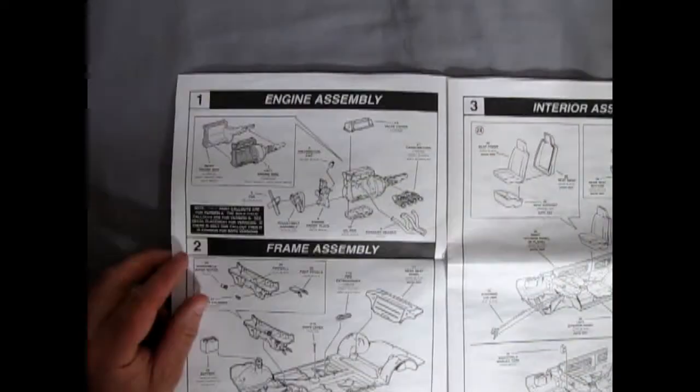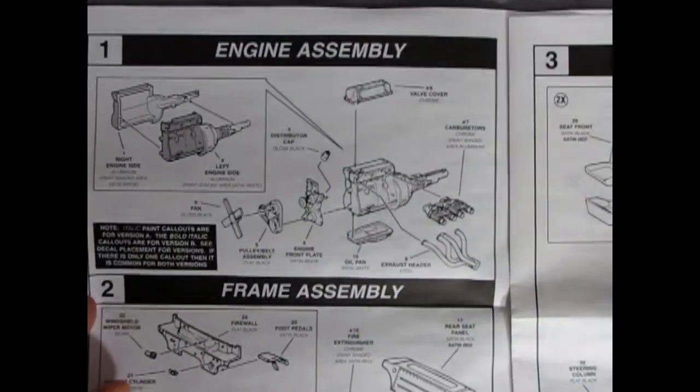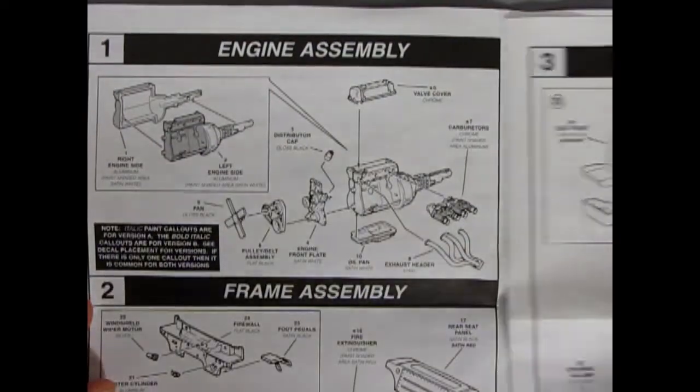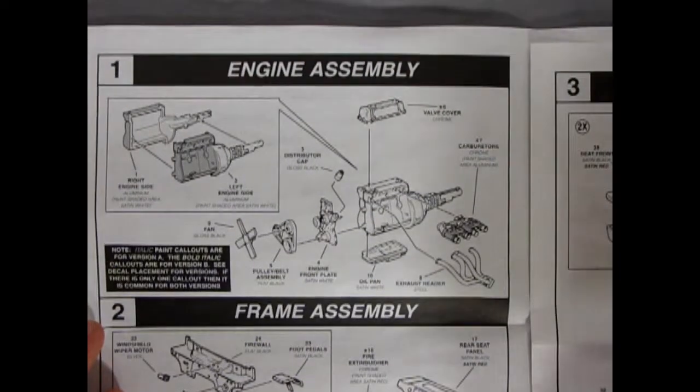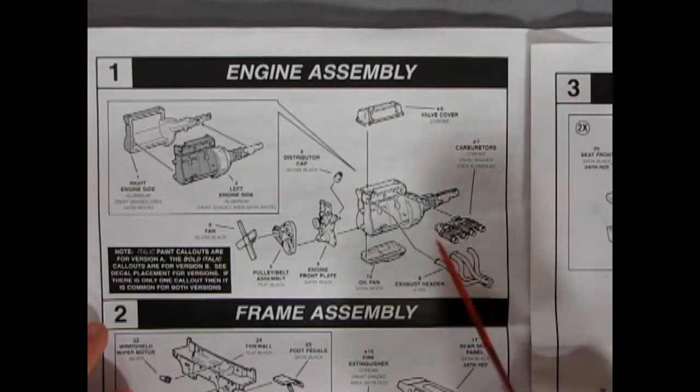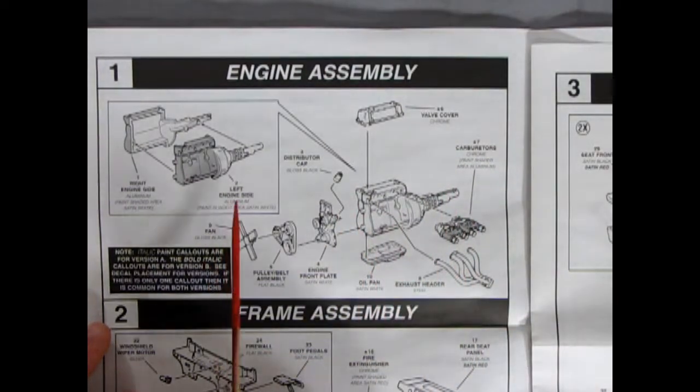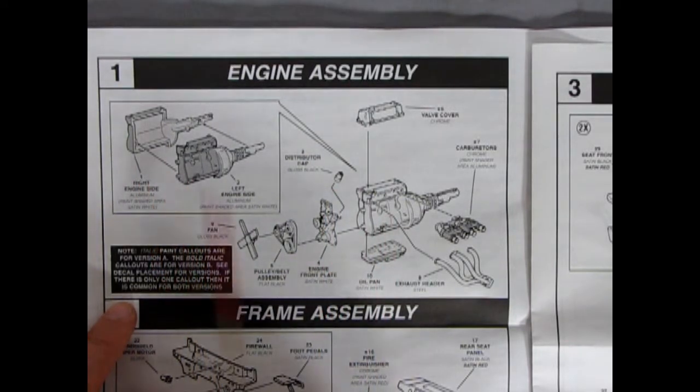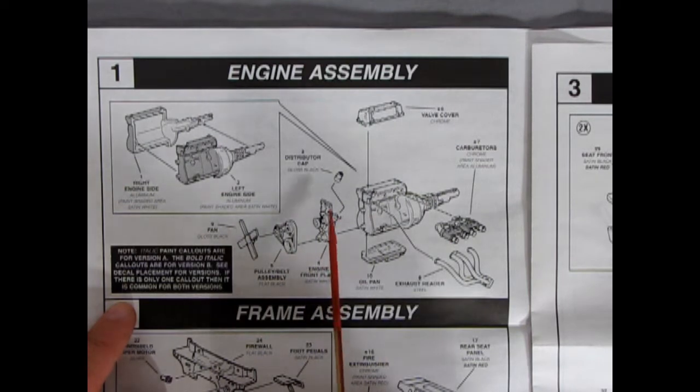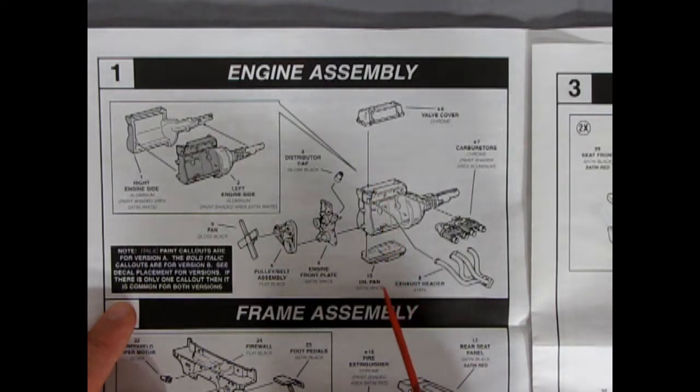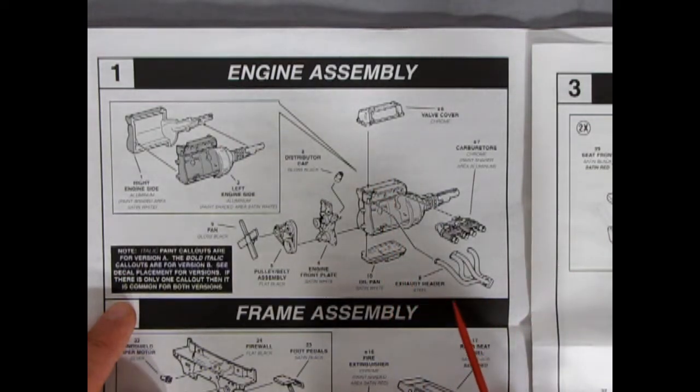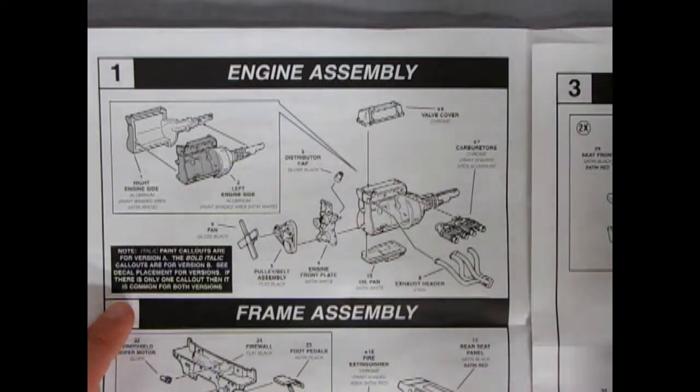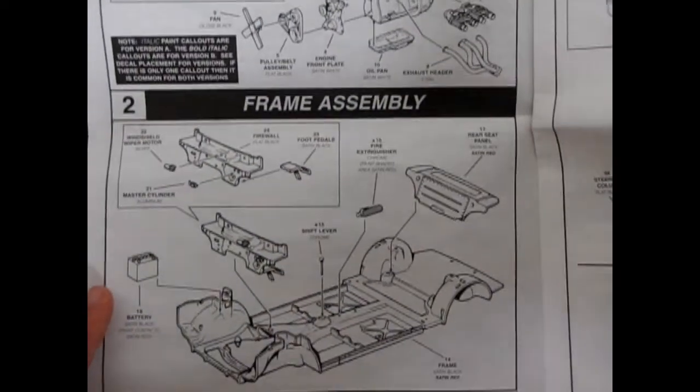This is a more race ready Datsun 510 motor because this one has the side carburetors and my sister's had an air cleaner in it. So a regular carburetor with an air cleaner. So this is quite different. You get your right and left hand side engines, the fan, the pulleys, the engine front plate, the distributor cap, left and right hand side engine block, valve cover to go on the top and an oil pan on the bottom, exhaust headers and of course our four carburetors which I believe are Weber carburetors. I could be mistaken. Prove me wrong in the comments below.